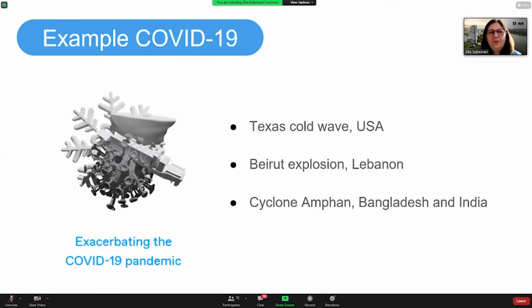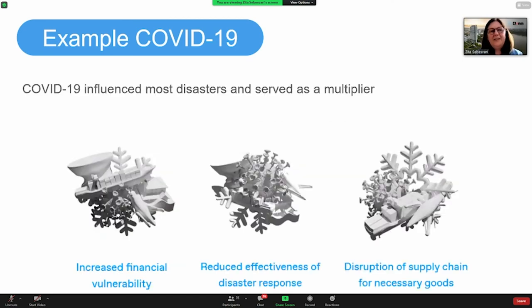So looking a little bit more into COVID-19, how this was actually interwoven so much with everything that has happened. For example, when the Texas cold wave hit, this actually exacerbated the COVID-19 case numbers and situation in Texas, as there was an electricity cut, so ventilators couldn't work. And there have been cases of death because of this interlinkage of the two. The same in Beirut because also hospitals have been hit and there was no ability anymore to keep distancing. So cases, COVID cases peaked. And the same in the case of the cyclone Amphan. So it's an example of how different events influence each other. But as I said, in general, COVID-19 also influenced many other disasters and served as a multiplier.